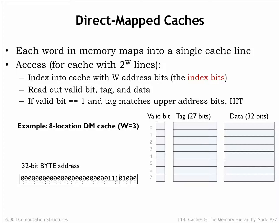The CPU can request that the valid bit be cleared for a particular cache line — this is called flushing the cache. For example, if the CPU initiates a read from disk, the disk hardware will read its data into a block of main memory, so any cached values for that block will be out of date. So the CPU will flush those locations from the cache by marking any matching cache lines as invalid.